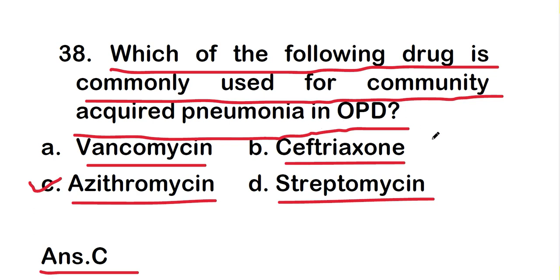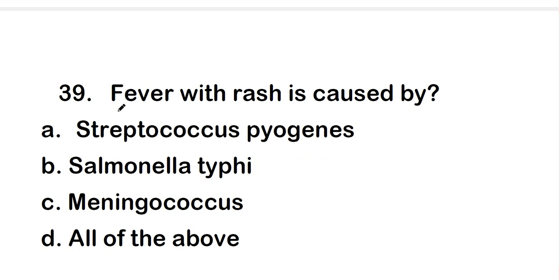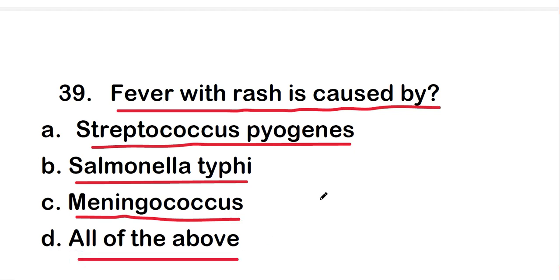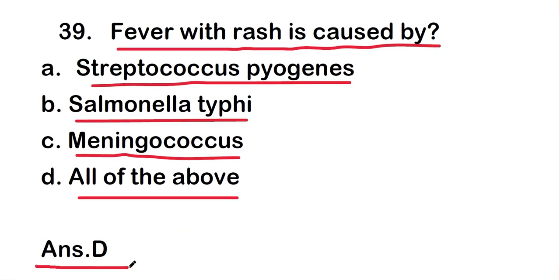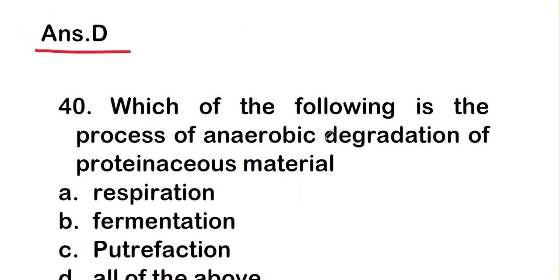Next question: fever with rash is caused by Streptococcus pyogenes, Salmonella typhi, Meningococcus, or all of the above. The right answer is option D — all of the above. All these organisms cause fever with rash.